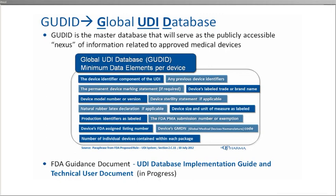The FDA is preparing a guidance document, the UDI Database Implementation Guide, which provides direction for companies in preparing their product's data for submission. It addresses metadata, required data elements, and defines the elements that will be part of the online web-based portal.